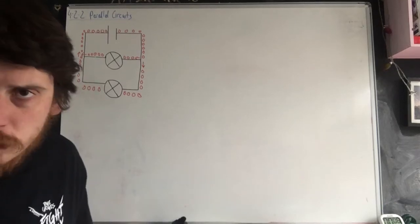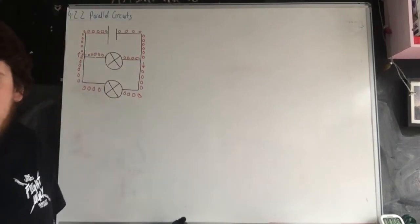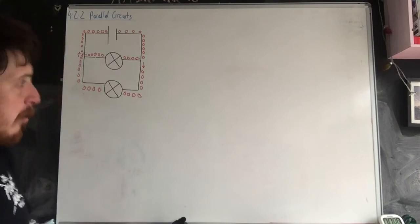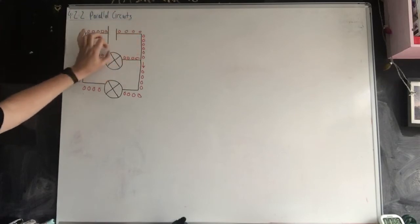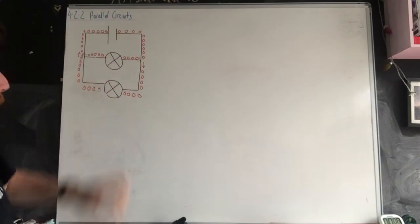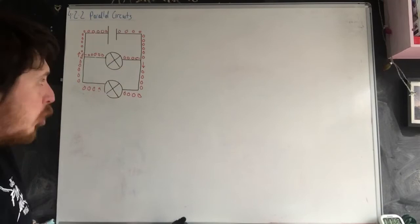Greetings, I'm here to talk to you about parallel circuits and how they behave. Parallel circuits are circuits with branches, so these are not complete loops and the current may take different paths with the electrons representing current.